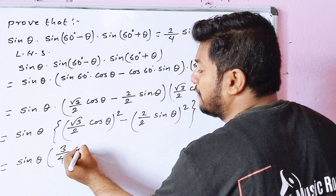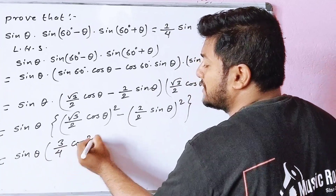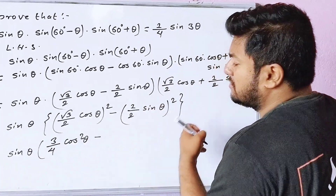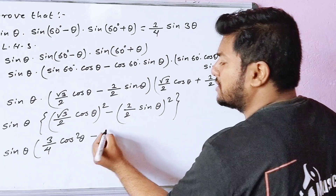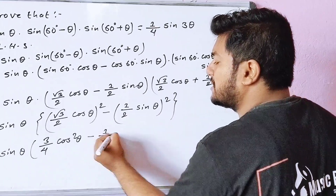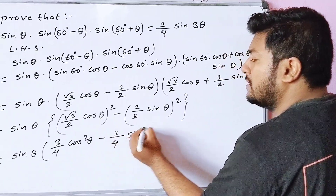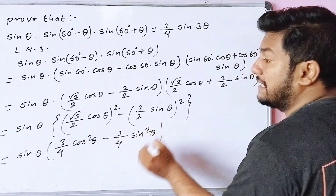Applying a squared minus b squared: we get root 3 by 2 into cos theta, the whole squared, minus 1 by 2 into sin theta, the whole squared. This gives 3 by 4 cos squared theta minus 1 by 4 sin squared theta.